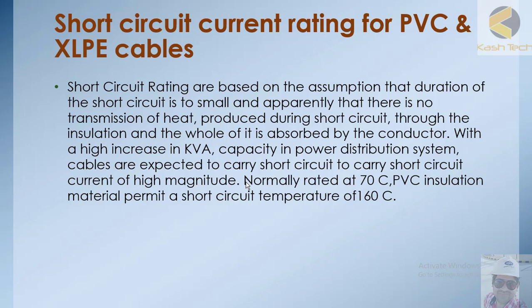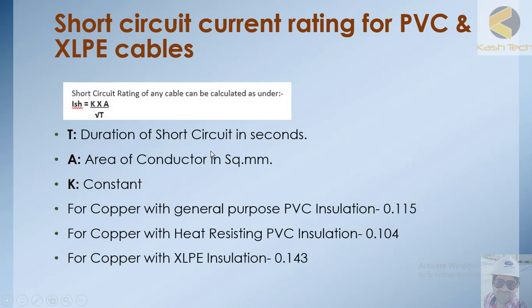PVC insulation, normally rated at 70°C, permits a short circuit temperature of 160°C. The short circuit current of any cable is calculated as: I_sc = k × A / √t, where t is the duration of the short circuit in seconds and A is the area of the conductor in mm². The constant k is 0.115 for copper with general PVC insulation, 0.104 for copper with heat-resistant PVC, and 0.143 for copper with XLPE insulation.